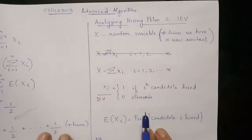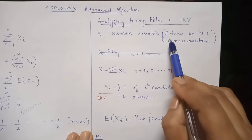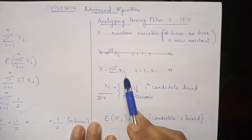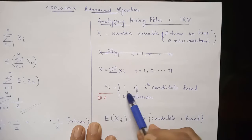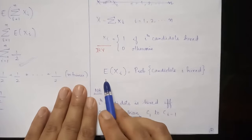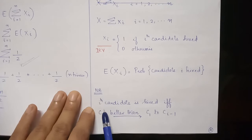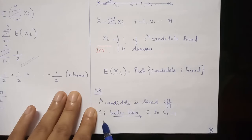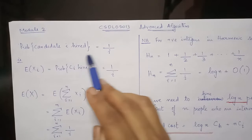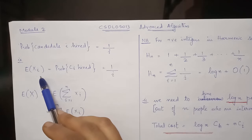Now let us analyze the hiring problem using the indicator random variable. Here, capital X represents the random variable for the number of times we need to hire a new assistant. So X equals the summation of Xi, where Xi is the indicator random variable equal to 1 if candidate i is hired and 0 otherwise. As per the lemma, E[Xi] equals the probability of hiring candidate i. The i-th candidate is hired if and only if the i-th candidate is better than all previous candidates.